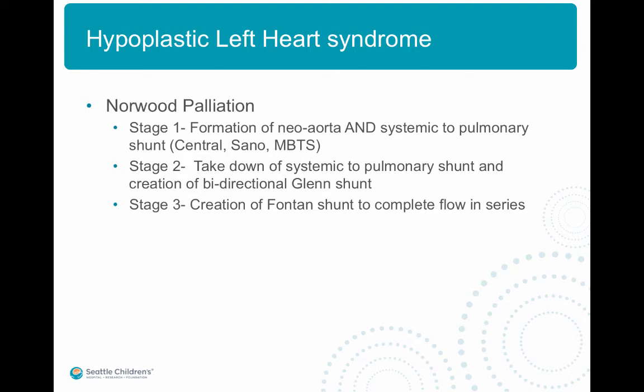Hypoplastic left heart syndrome includes a small left ventricle as well as aortic valve hypoplasia or atresia, as well as a hypoplastic ascending aorta. Norwood described a three-staged procedure in which the first stage includes formation of a neo-aorta, where the hypoplastic aorta is anastomosed with the pulmonary artery in a side-to-side fashion, and a systemic to pulmonary shunt such as a central, Sano, or modified BT shunt is formed.